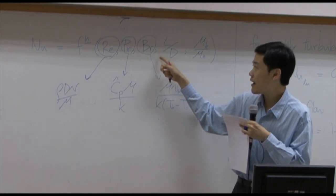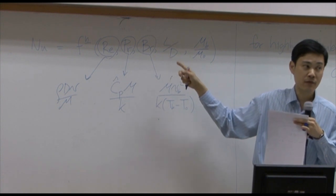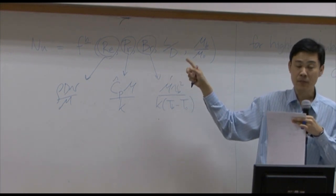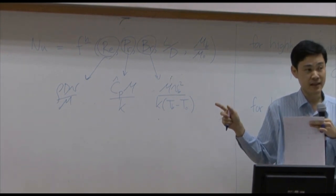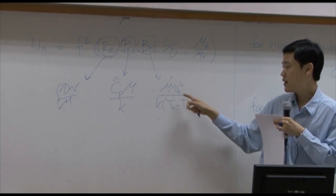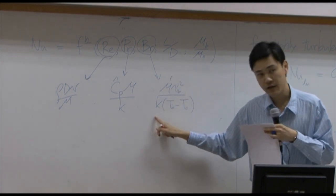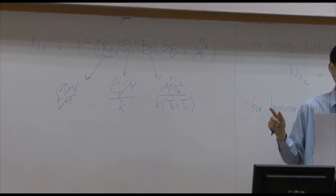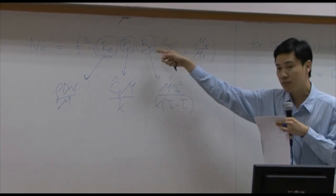Then you may have a function of the third dimensionless number which is called Brinkman number. Brinkman number occurs whenever you have viscous heat. It is a function of viscosity, velocity, and thermoconductivity. If viscous heat is unimportant, then you can just drop the Brinkman number.